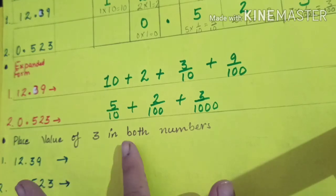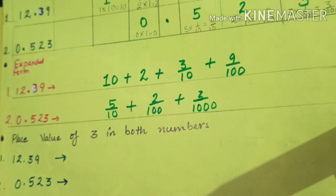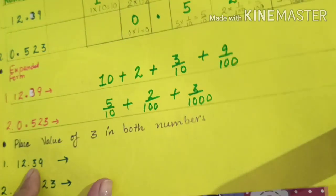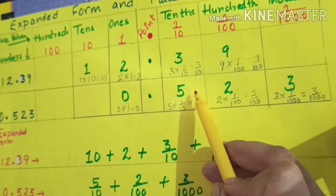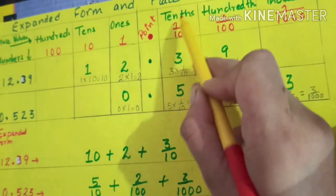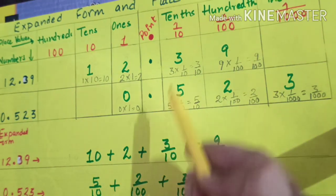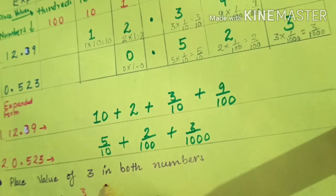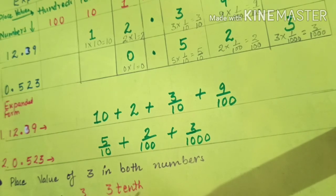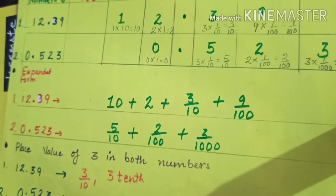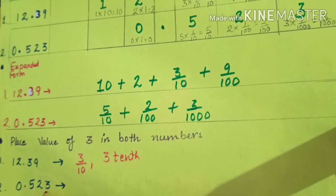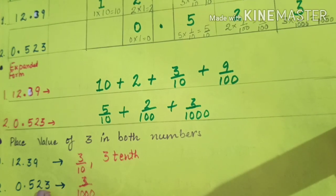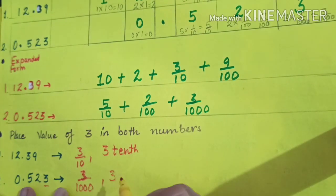The last thing is the place value of three in both numbers. We have already found these. The place value of three in 12.39 is three multiplied by one over ten, which is three over ten, or three-tenths — you can write it as three over ten or three-tenths. The place value of three in 0.523 — three is at the thousandths position — so the place value of three is three-thousandths.